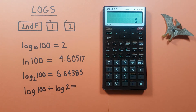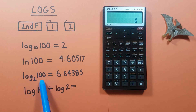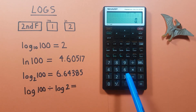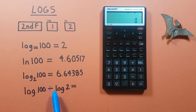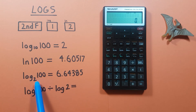But what if we wanted to find a log base that wasn't base 10 or natural log? Like for example, log base 2 of 100. Well, we can't set the base of the log on this calculator, but what we can do is use something called the change of base formula, where we find the log of the number divided by the log of the base, and that will give us the result we're looking for.